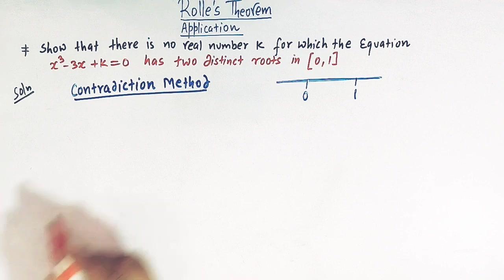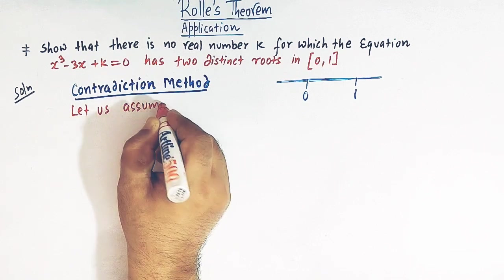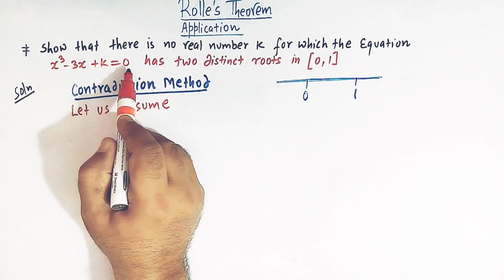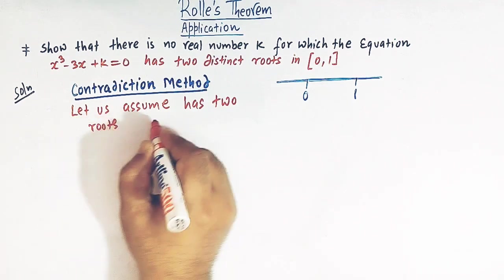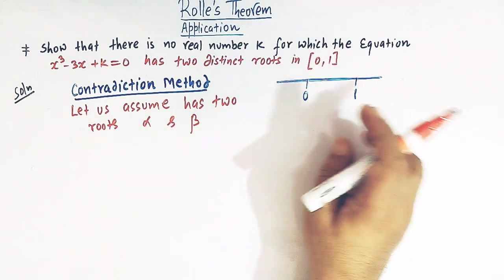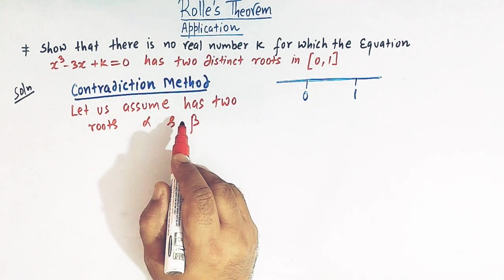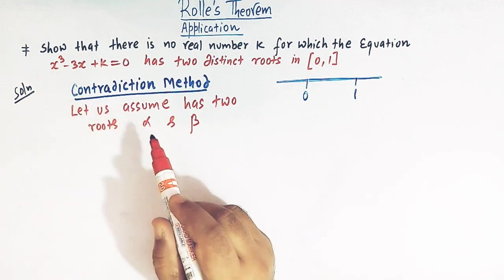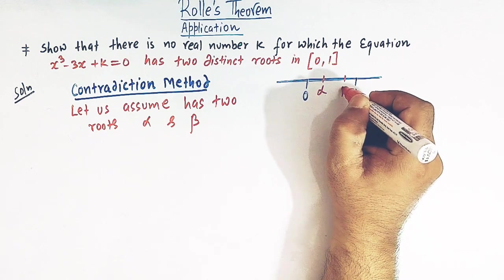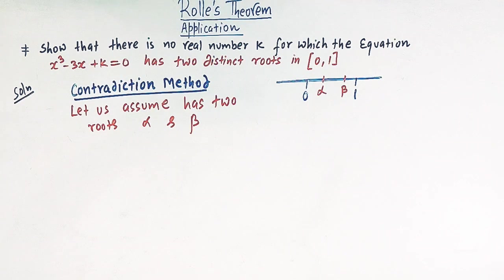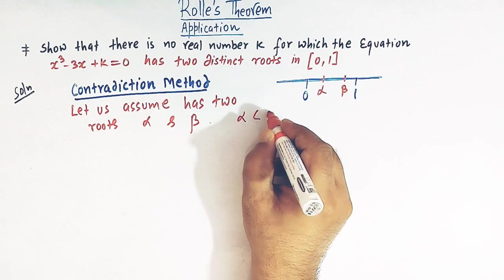Using the method of contradiction, let us assume that the equation x³ - 3x + k = 0 has two roots α and β lying in the interval [0, 1]. Let us further assume that α is less than β.